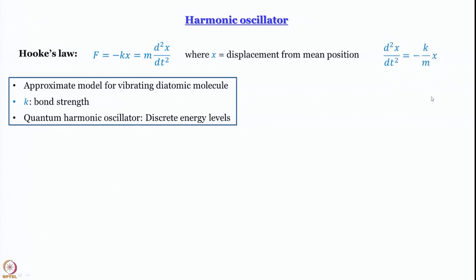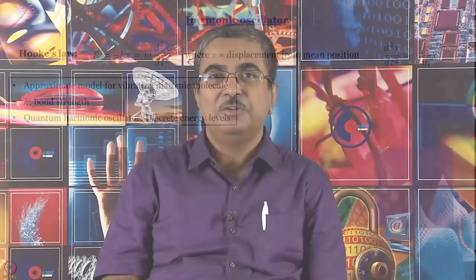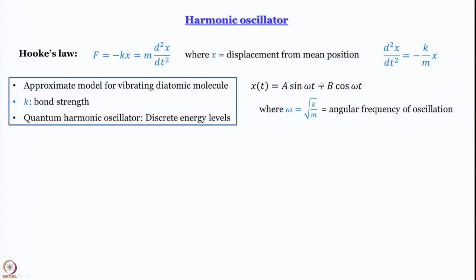This is a differential equation which we can try to solve. The trial solution we use is x(t) = A sin(ωt) + B cos(ωt) — again, the sine and cosine is reminiscent of circular motion. Here ω = √(k/m), which is the angular frequency of oscillation. To verify this is a valid solution, we differentiate it twice and see what we get.